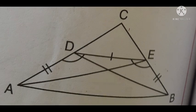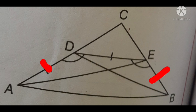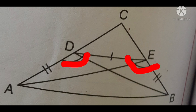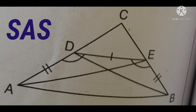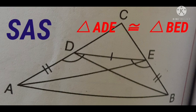Now I am going to discuss one more example. In this picture, you see that there are two triangles, triangle ADE and triangle BED. In triangle ADE and in triangle BED, AD equal to BE, angle ADE is equal to angle BED, and DE is a common side. So as per the criteria of SAS, triangle ADE is congruent to triangle BED.